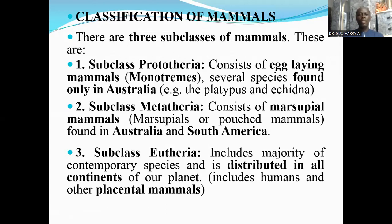The subclass Metatheria consists of marsupial mammals, also called marsupials or pouched mammals. These mammals are found in Australia and South America. Typical examples of these marsupial mammals are the kangaroos.